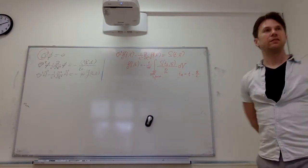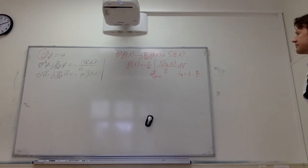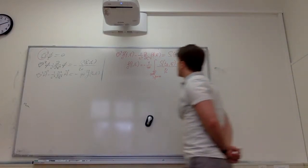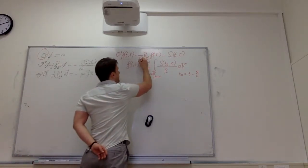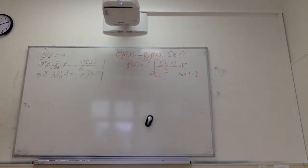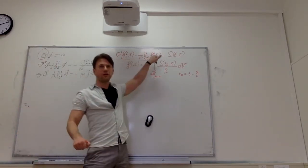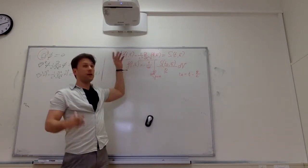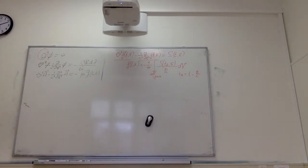This is a general solution for the particular boundary conditions where the fields go to zero at infinity. Now, how do we proceed? We want to prove that this is the solution — we plug it into the wave equation. We have to evaluate two things: the spatial Laplacian term and the temporal second derivative term.